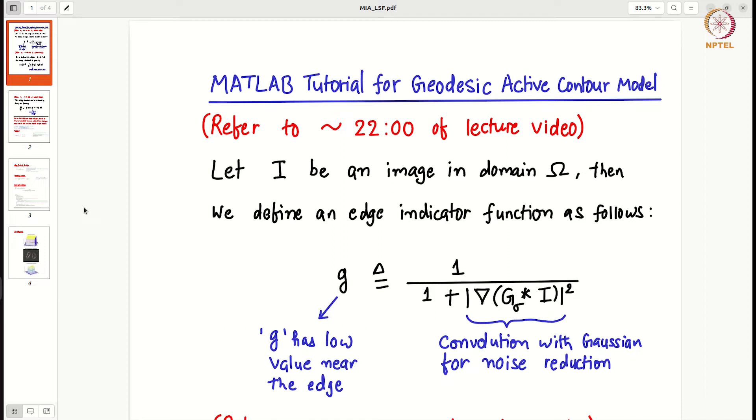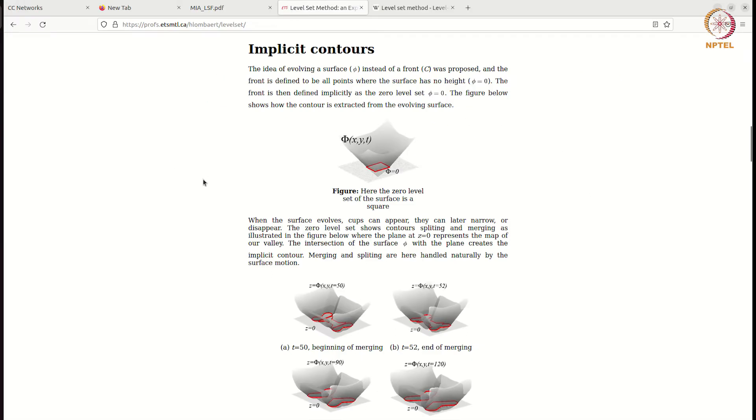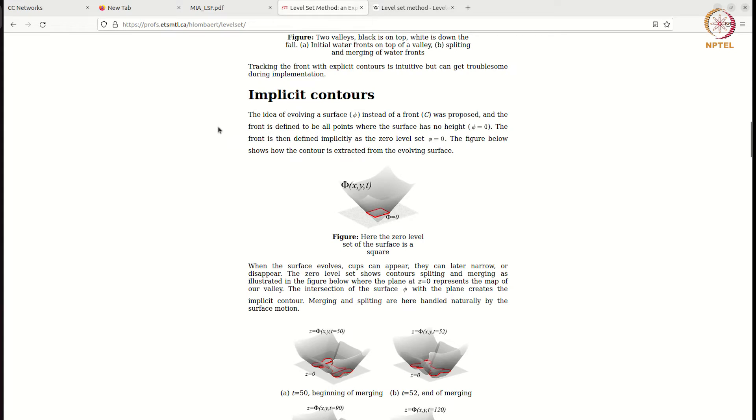But in level set formulation we do not have such explicit equation for C. Instead we have something else. So what is this? You can refer to this page. The idea is basically implicit contours. So what is this phi?